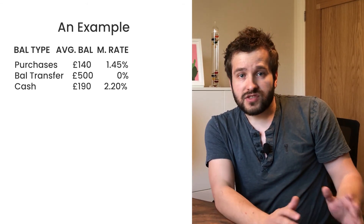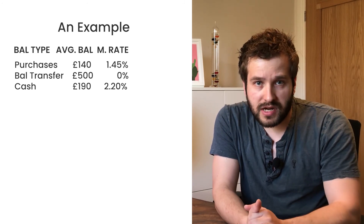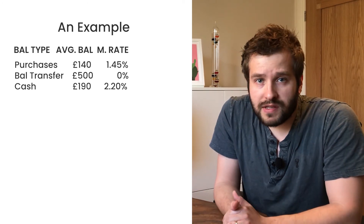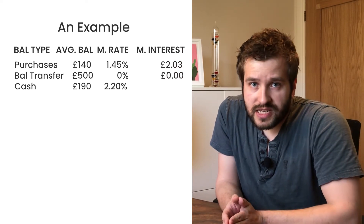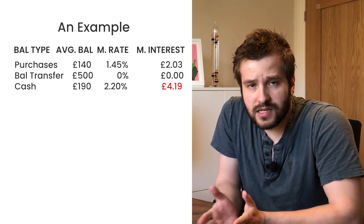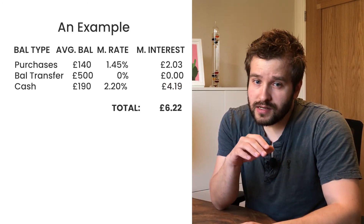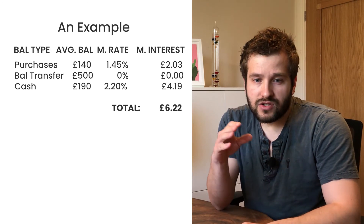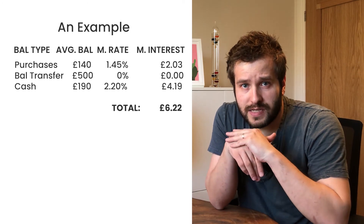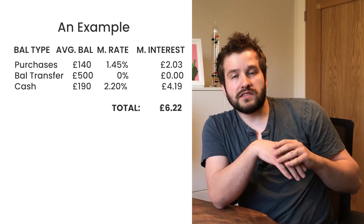Now the final calculation is really simple. For UK purchases: £140 × 1.45% = £2.03. For UK cash: £190 × 2.20% = £4.19. Add them together and the total interest owed is £6.22. For the same calculation in the US: $140 × 1.55% = $2.17, and $190 × 2.46% = $4.67, giving a total of $6.84. That's how much interest you'd owe in each respective country.